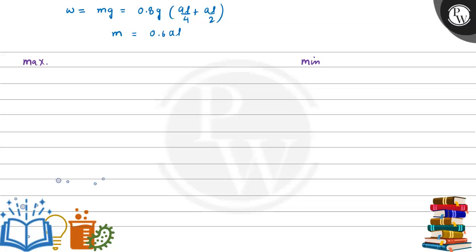Mass will be equal to volume of flotation bulb plus gravity bulb multiplied by density. Value of mass here is 0.6 AL. This is equal to volume, which was equal to AL divided by 4 and rho. When we solve this, rho maximum will come as 0.24.